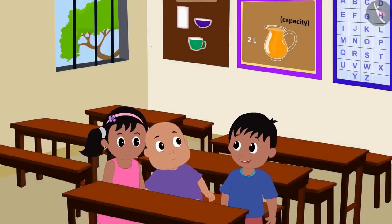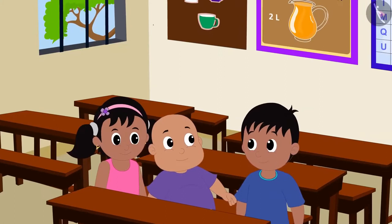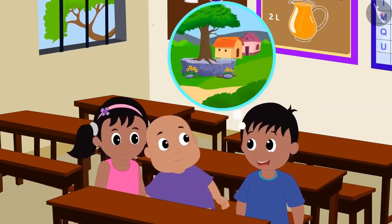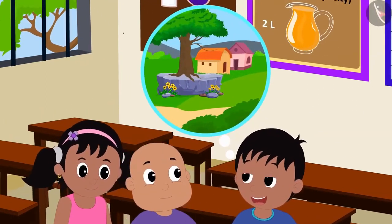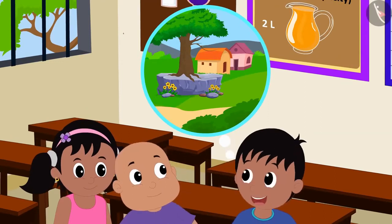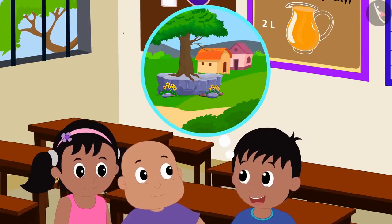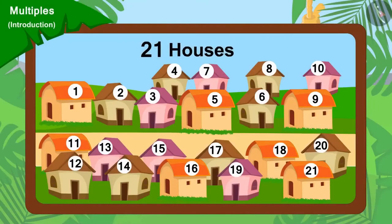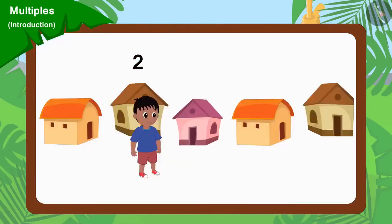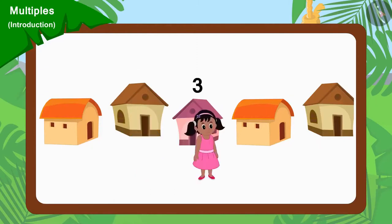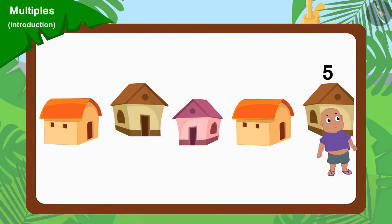Raju told Pinky and Bablu a plan. He said that they would not go to the same house but go to different houses. There are a total of 21 houses in the village. Raju will go to every second house, Pinky will go to every third house, and Bablu will go to every fifth house.